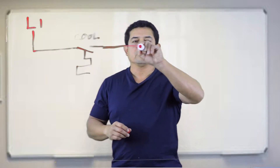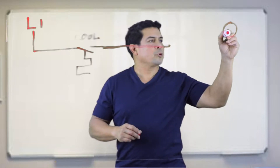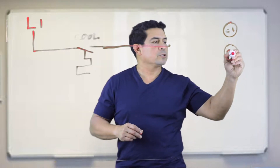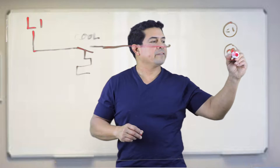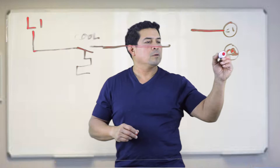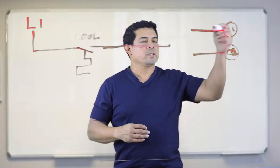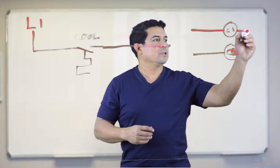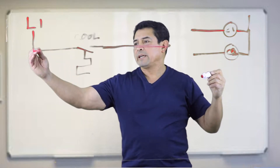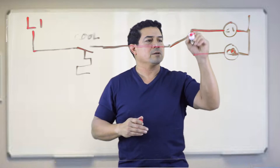Now, we're going to talk about having compressor number one and then compressor number two. We basically have two compressors. We don't want to run one compressor all of the time — we want to switch back and forth and make sure they both get the same amount of running time. So we have a power supply, a conductor, a switch, and now I have another switch right here.